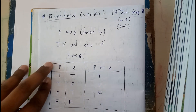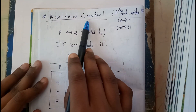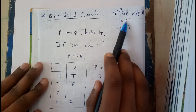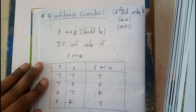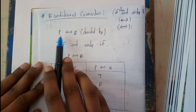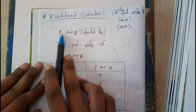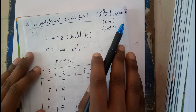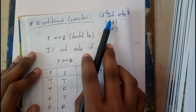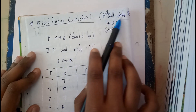Hello guys, we are back with our next tutorial. In this tutorial, let's see what is a biconditional connective. This is a double direction — even in both directions. It is denoted by a double arrow mark, written as p double implies q. To read it: p if and only if q.